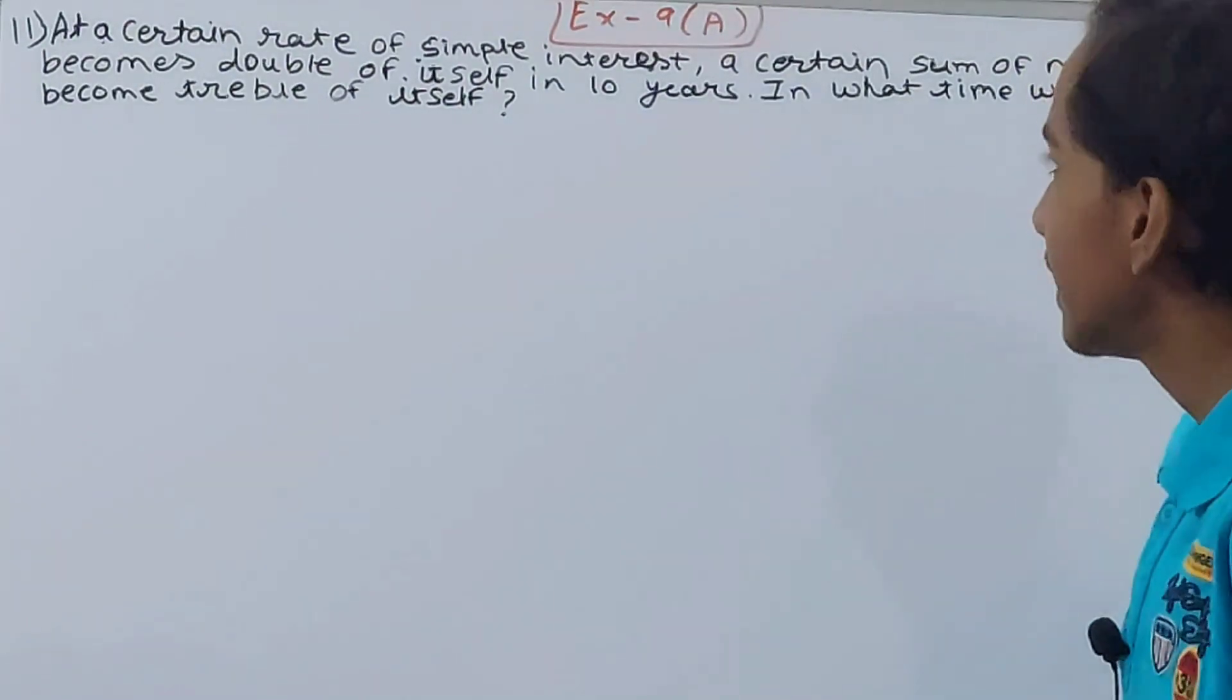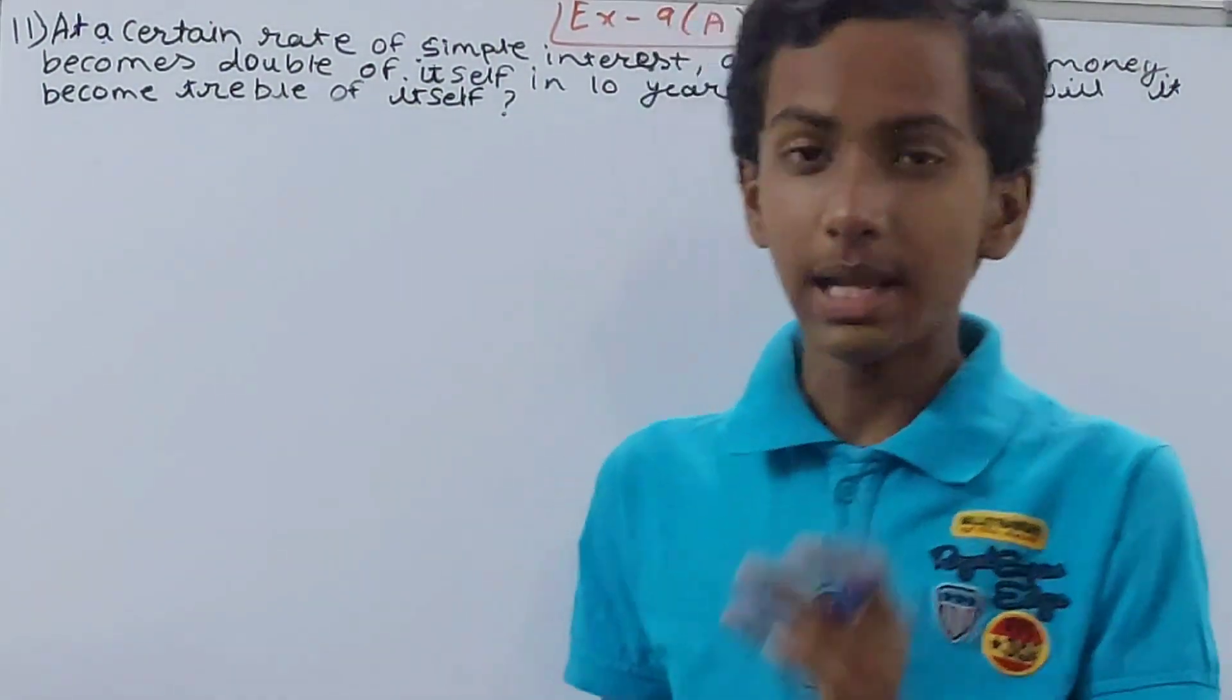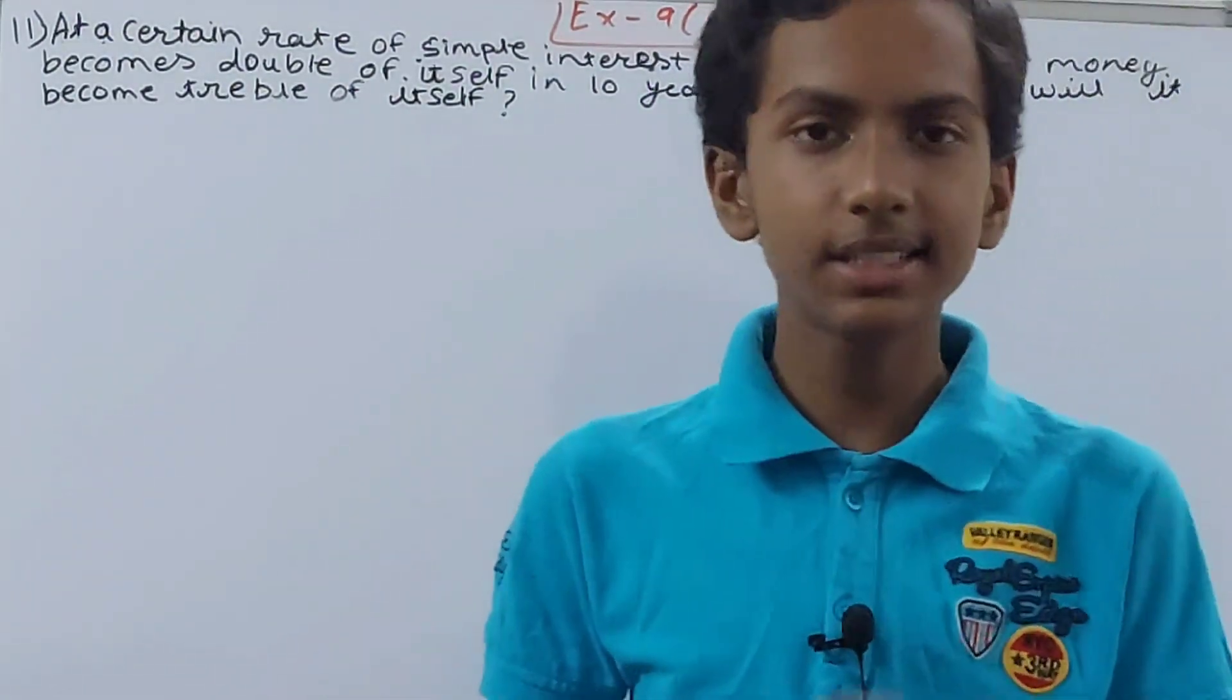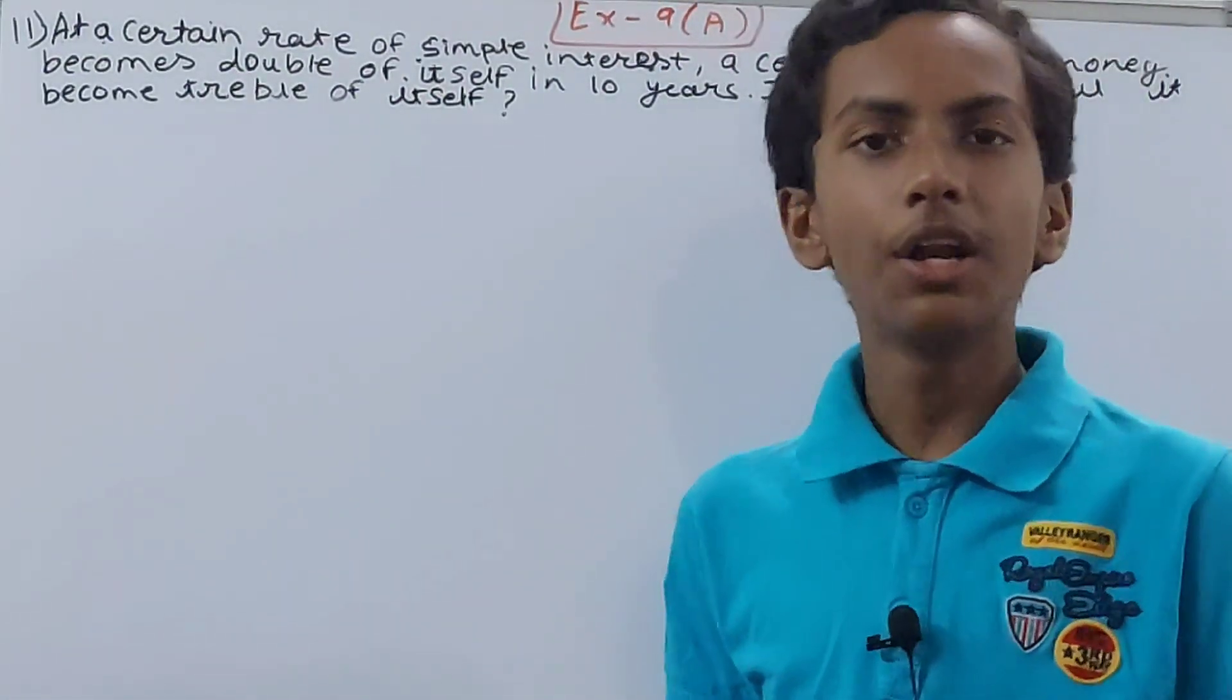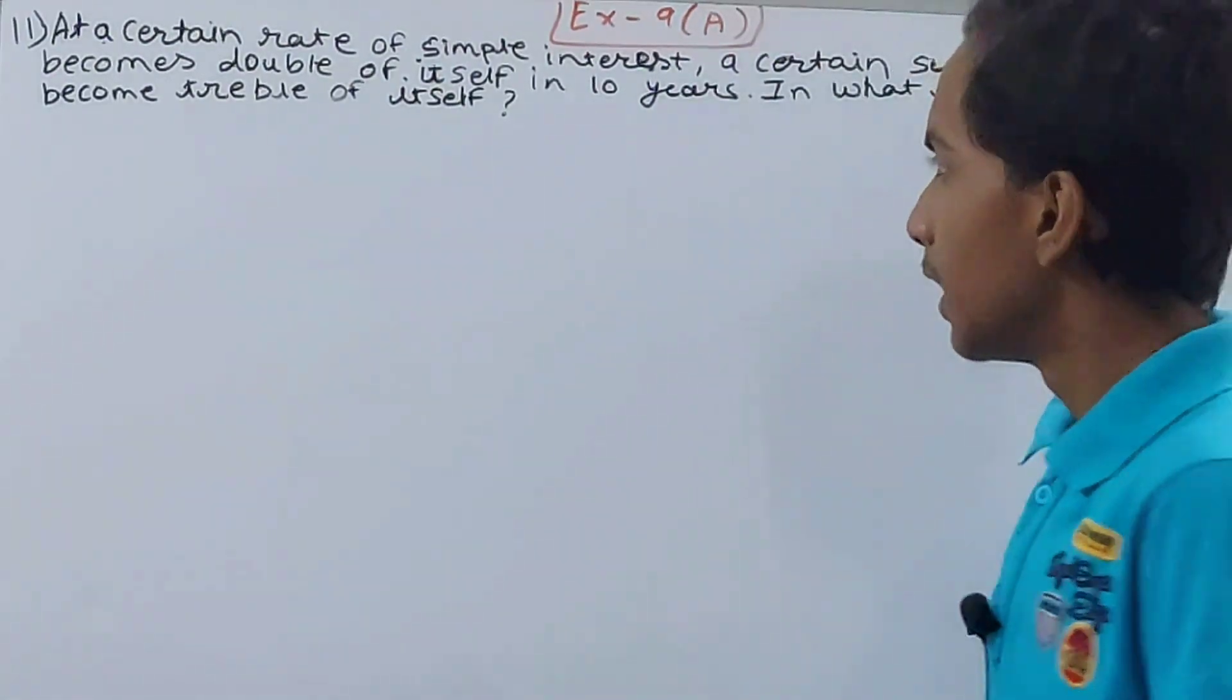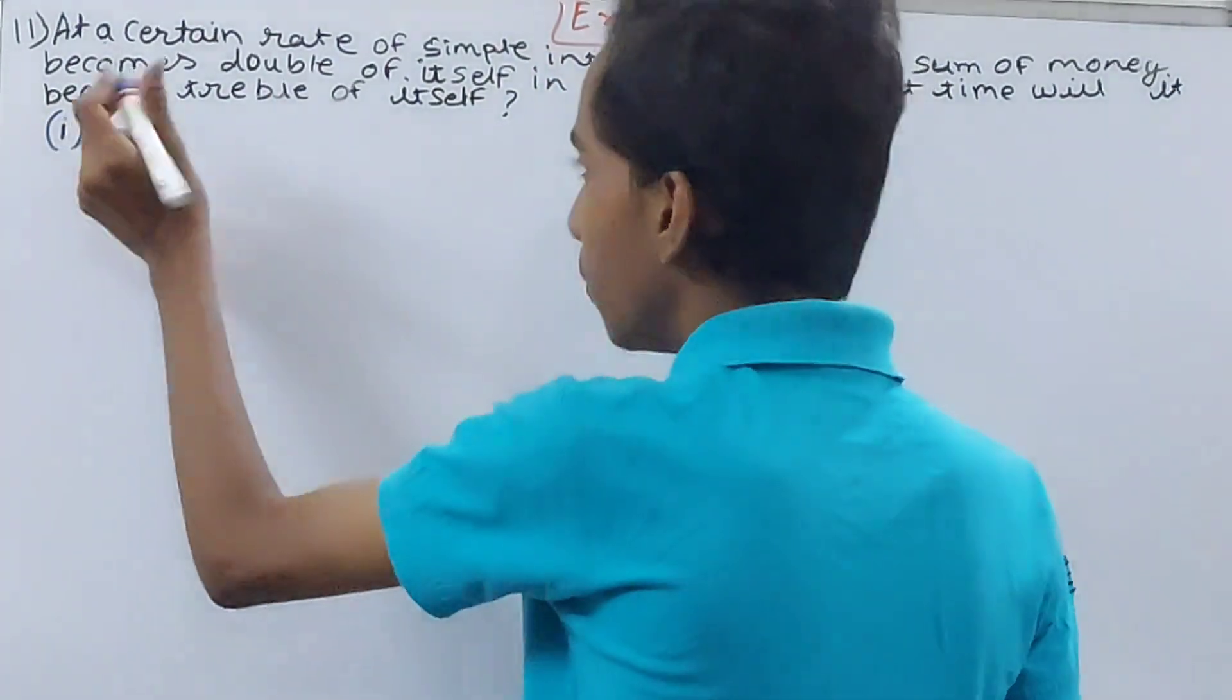According to the question, the rate is not given. If 100 is becoming 200, then what is the simple interest? See, 200 minus 100, that is rupees 100. So basically the number itself is the simple interest because 100 is becoming 200. If I do 200 minus 100, we get 100. We'll solve this question in two parts.